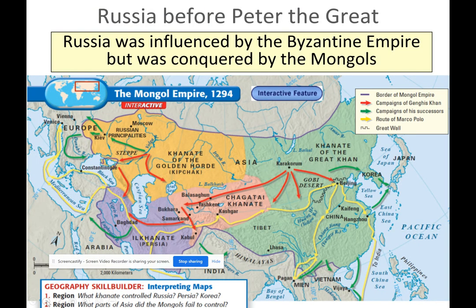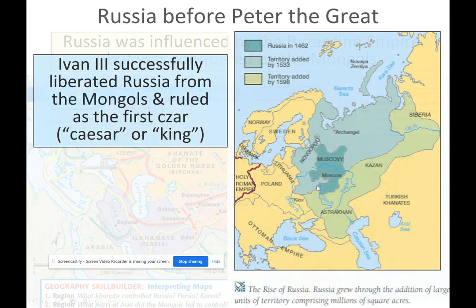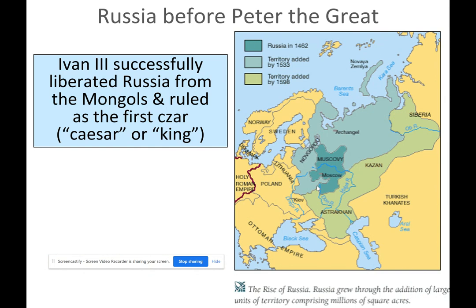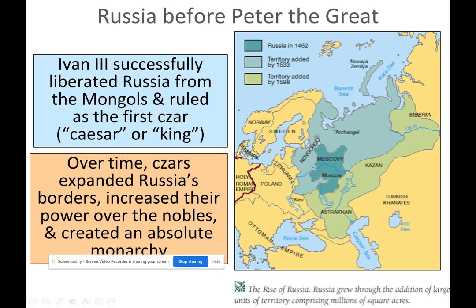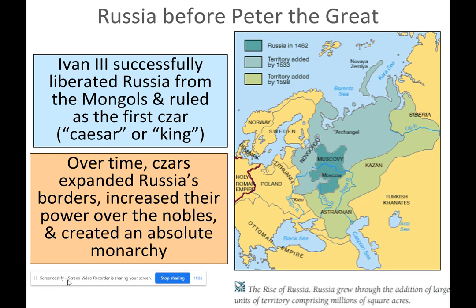Russia was influenced by the Byzantine Empire but was conquered by the Mongols. Ivan III successfully liberated Russia from the Mongols and ruled as the first Tsar. Tsar means Caesar or king, and that's how we refer to Russian absolute monarchs. Over time, Tsars expanded Russia's borders and increased their power over the nobles, creating an absolute monarchy.